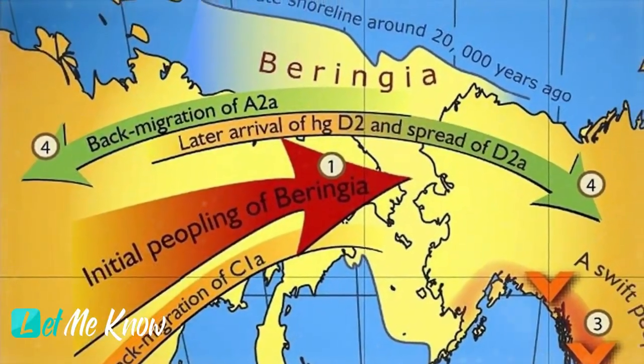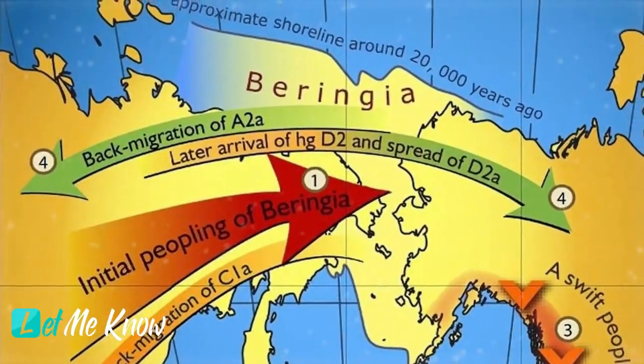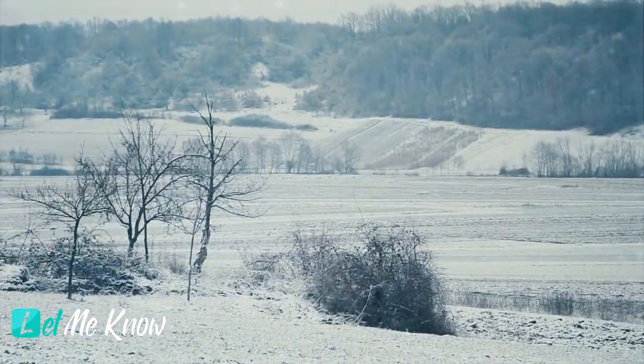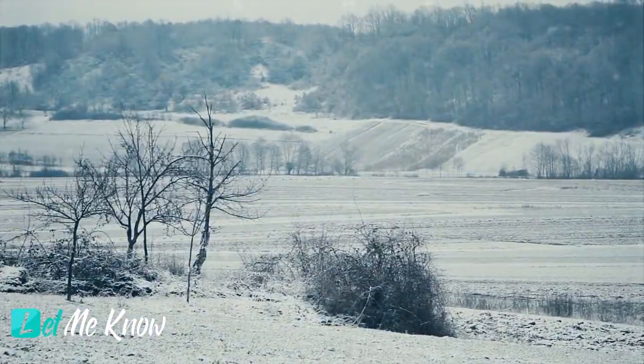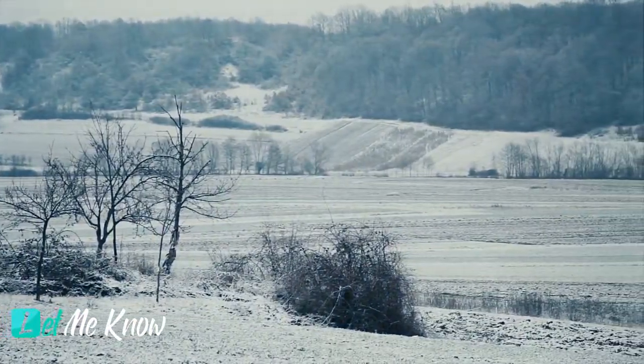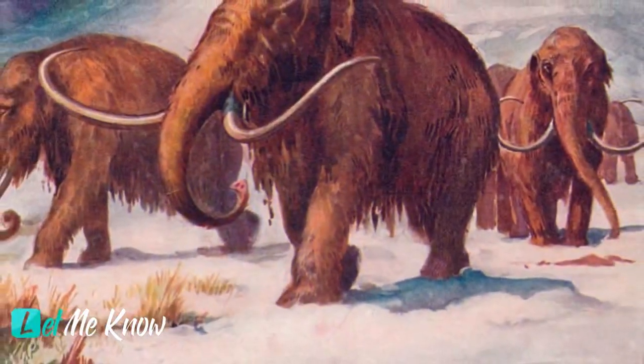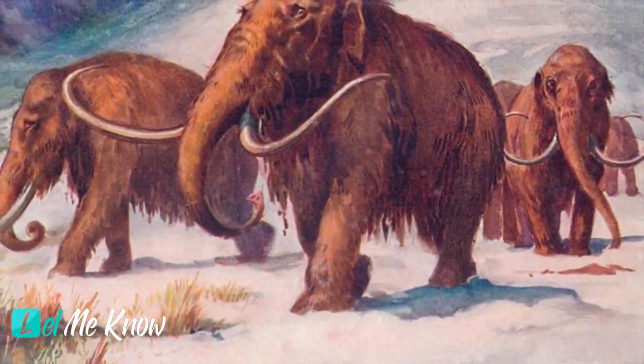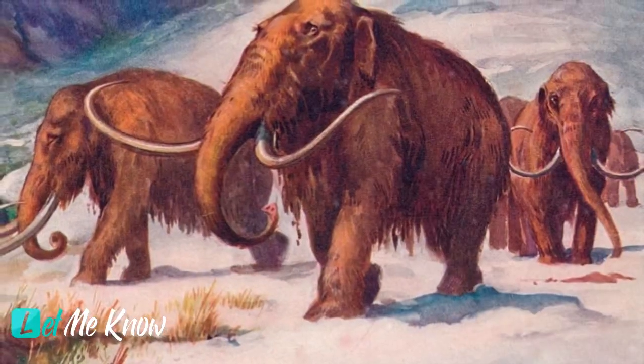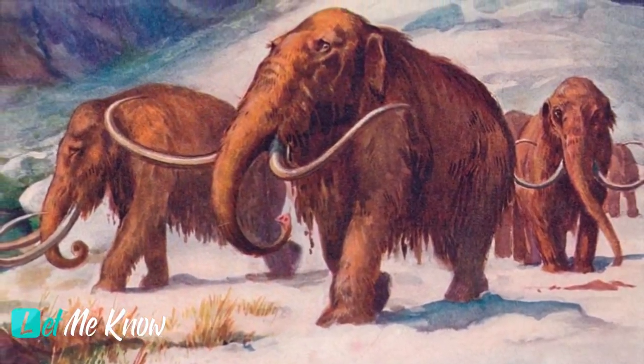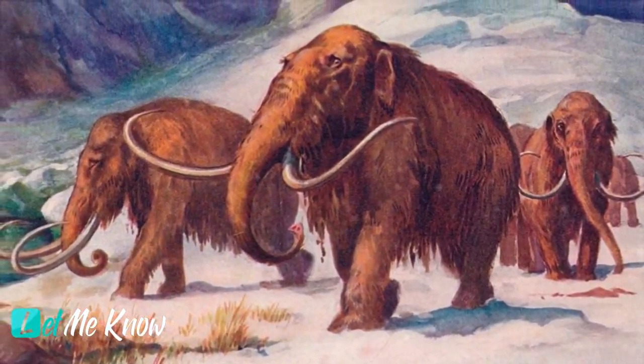Simply put, an Ice Age is defined as a period where both of Earth's poles are covered in ice. And glaciations are a period when the ice extends across much of the planet, of which there have been 12 in the last 1 million years. The last glaciation peaked around 18,000 years ago and came to an end around 11,700 years ago.